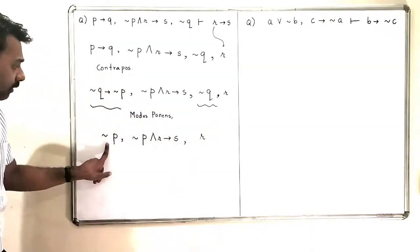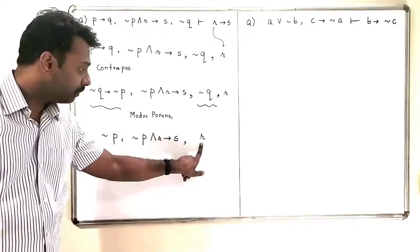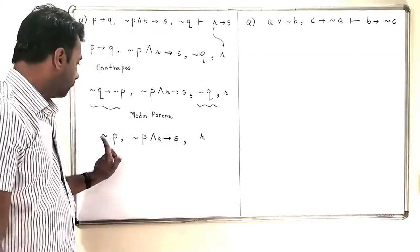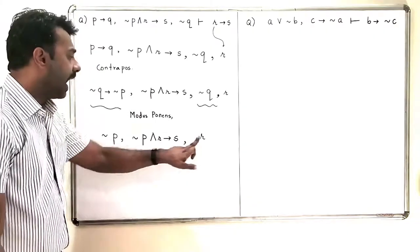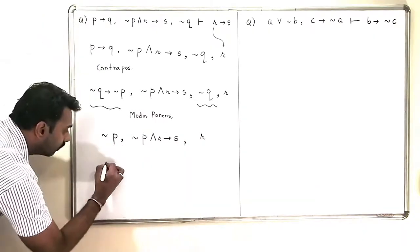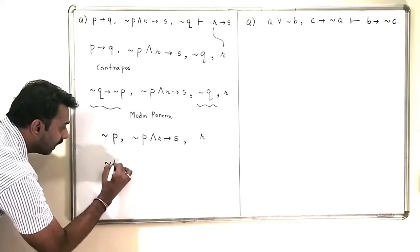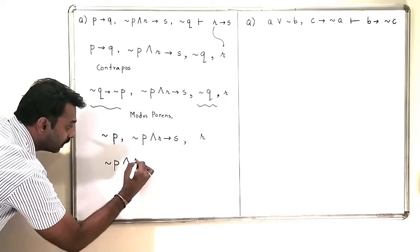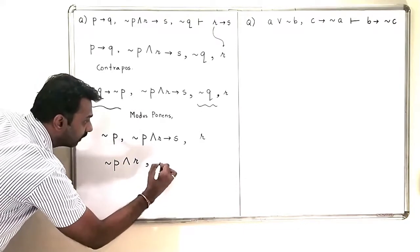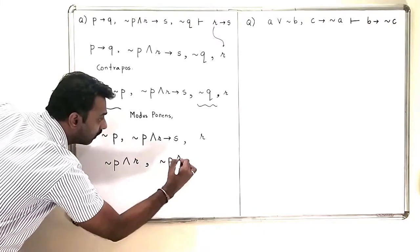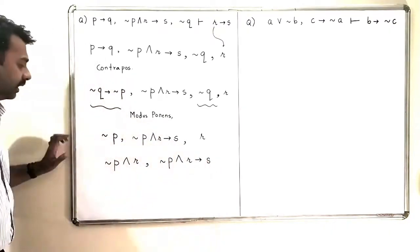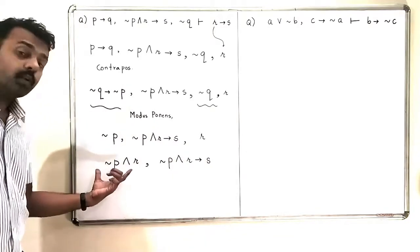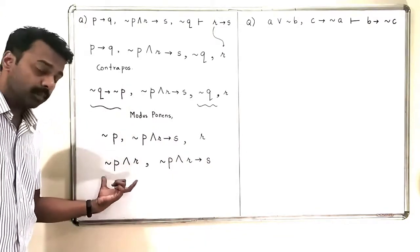So, now I have negation P with me and I have R with me. So, I can take their conjunction because it is negation P and R. So, it is negation P and R which is called conjunction with negation P and R implies S. And now, you can see that this is again of the form of modus ponens.